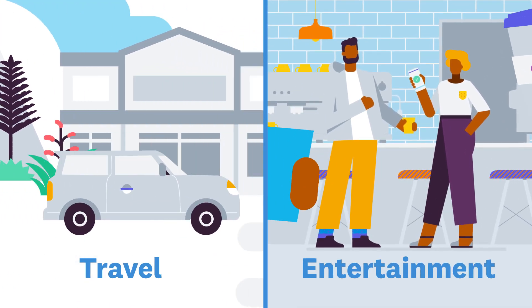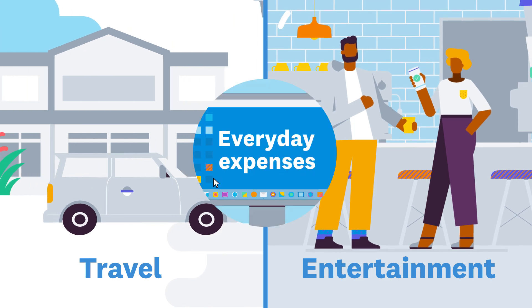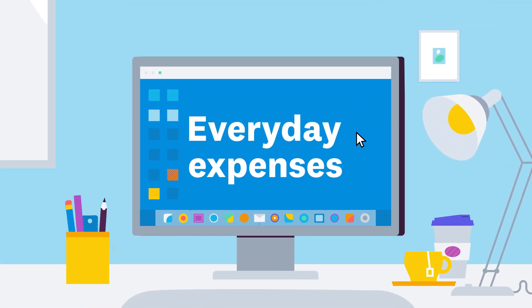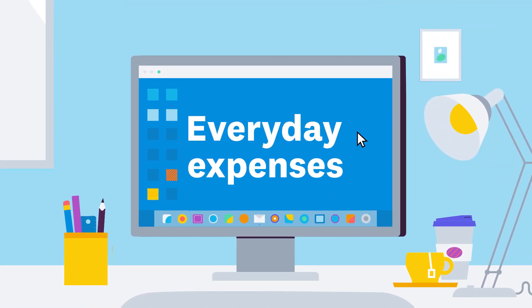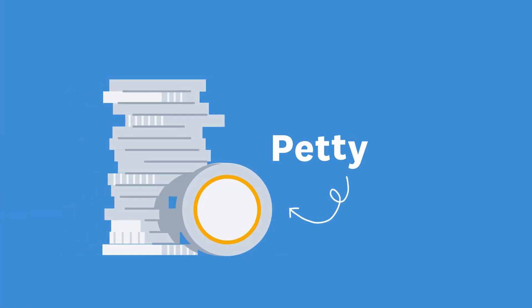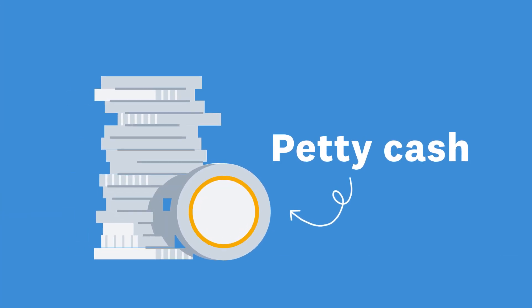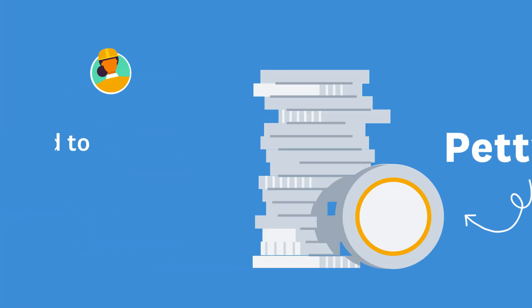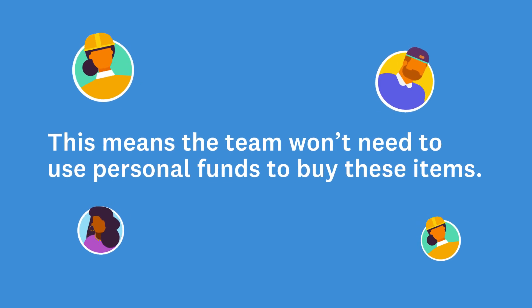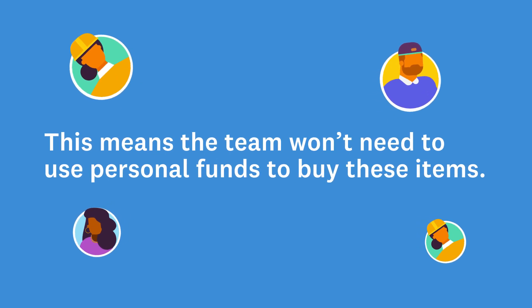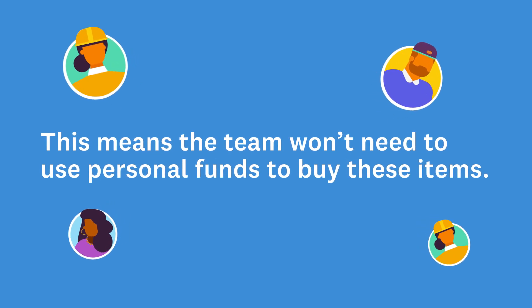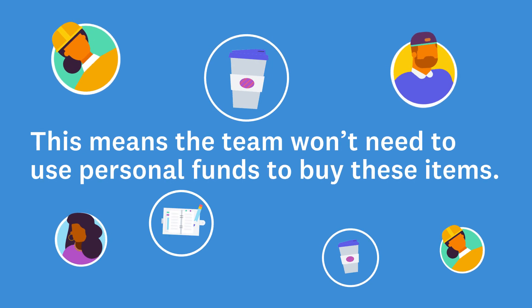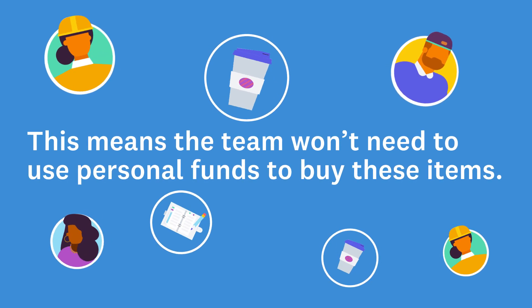In the normal course of running a business, there'll be everyday expenses such as milk or stationery. Many businesses keep a small amount of money, called petty cash, for such expenditure. This means the team won't need to use personal funds to buy these items, resulting in an expense claim every time someone wants a cup of coffee or a new notepad.